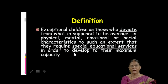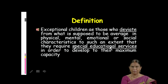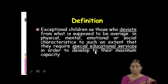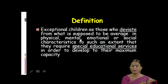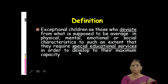These children don't have the capacity of a normal child. Each and everybody is unique and their capacity is also different. What special educational services do is develop the children with special needs' capacity to the maximum. So children with special needs are those who deviate from what is supposed to be average in physical, mental, emotional, or social characteristics, to such an extent that they require special educational services in order to develop to their maximum capacity.